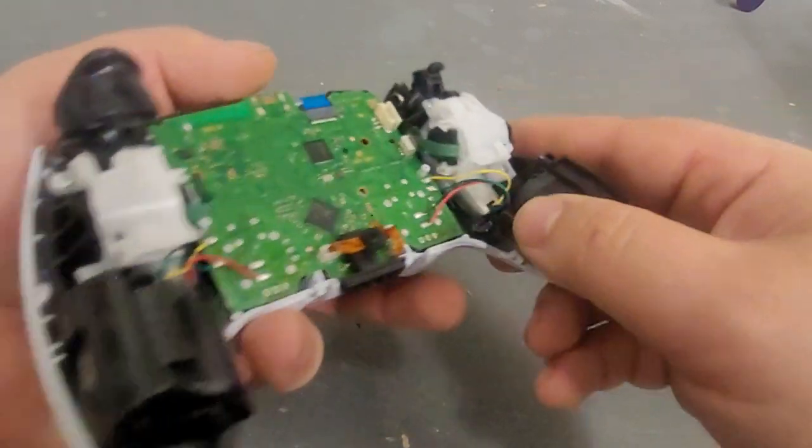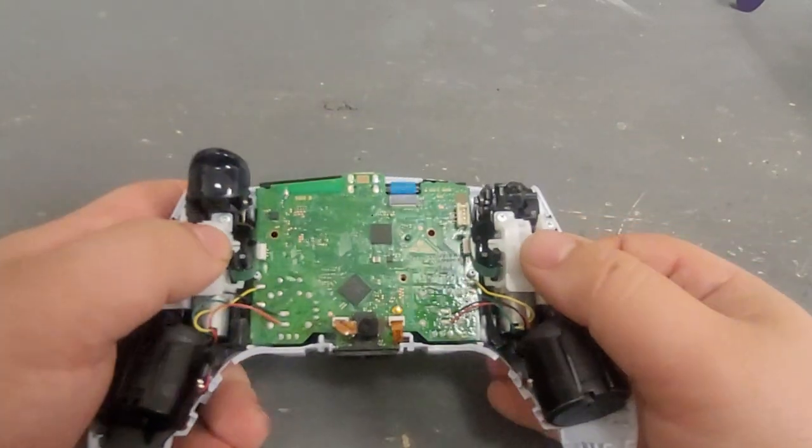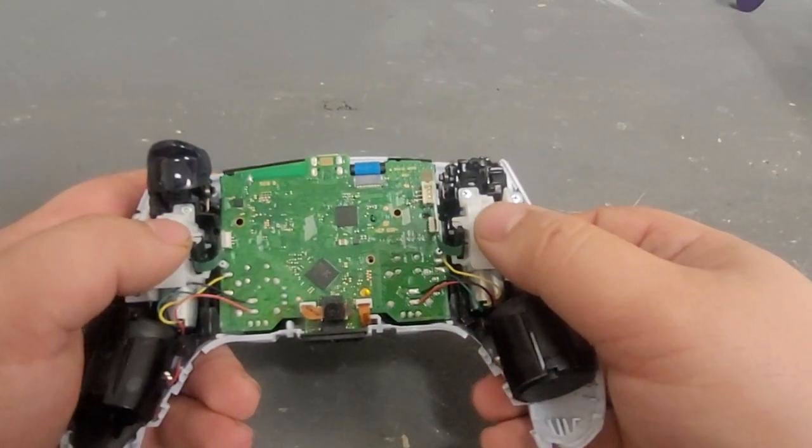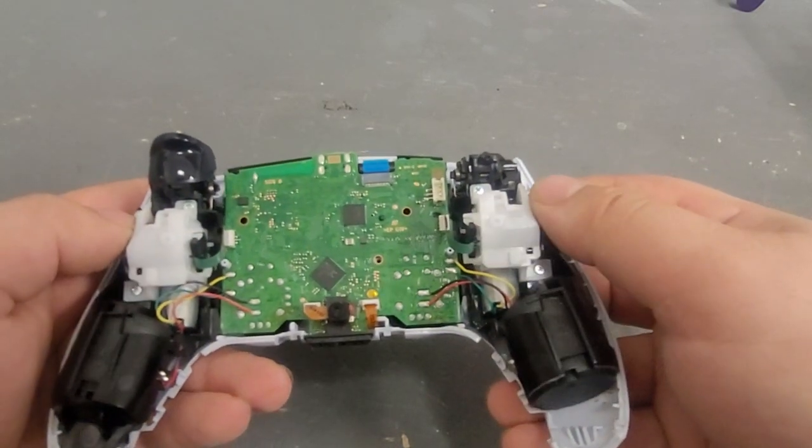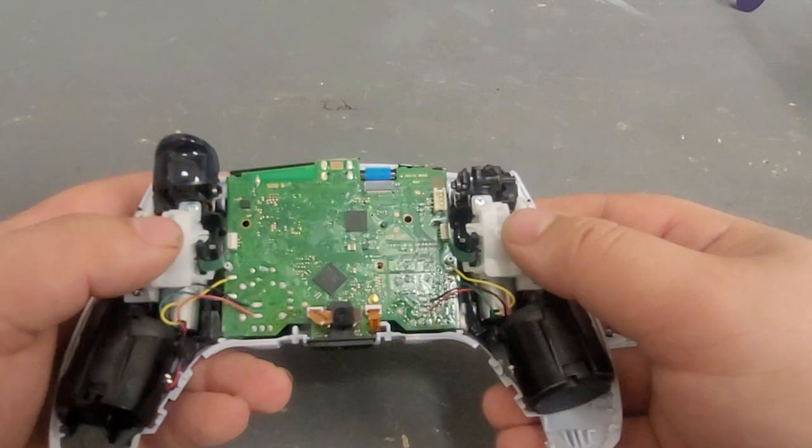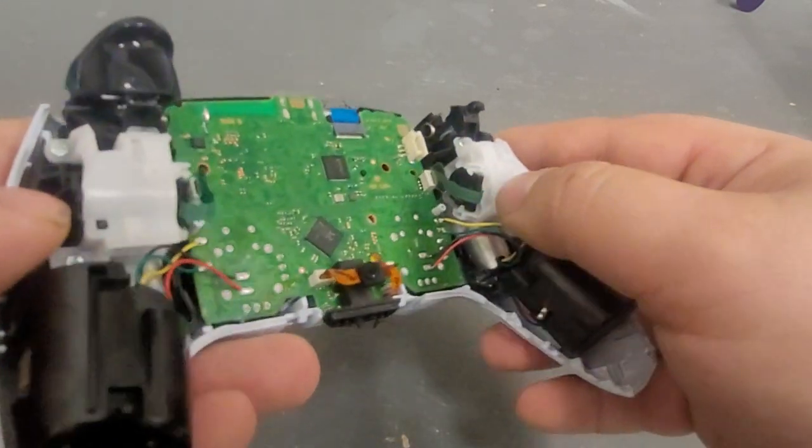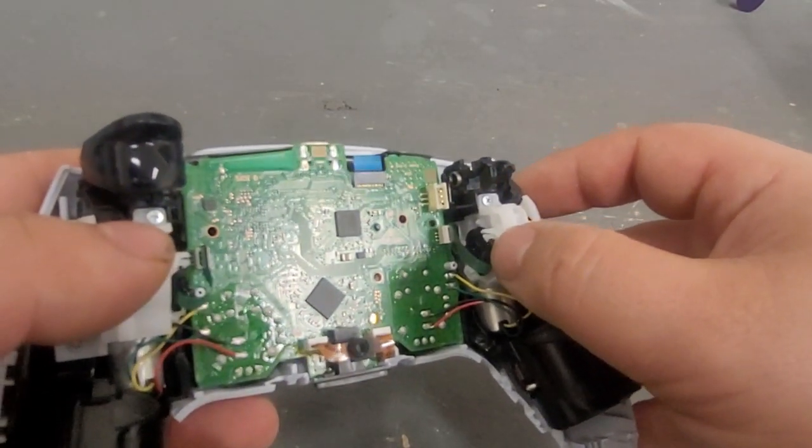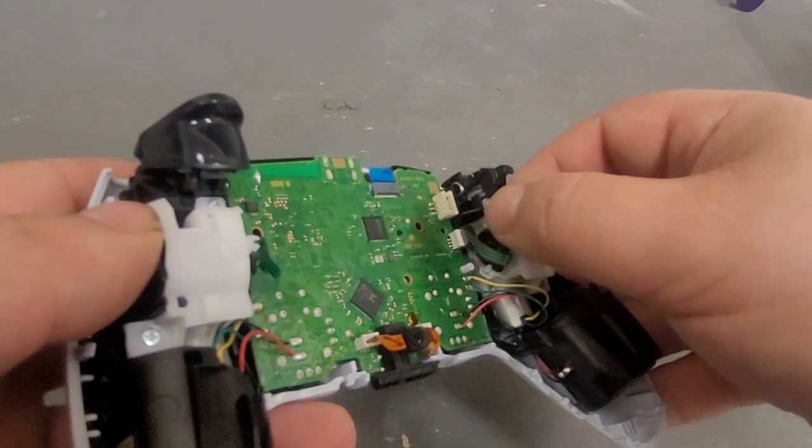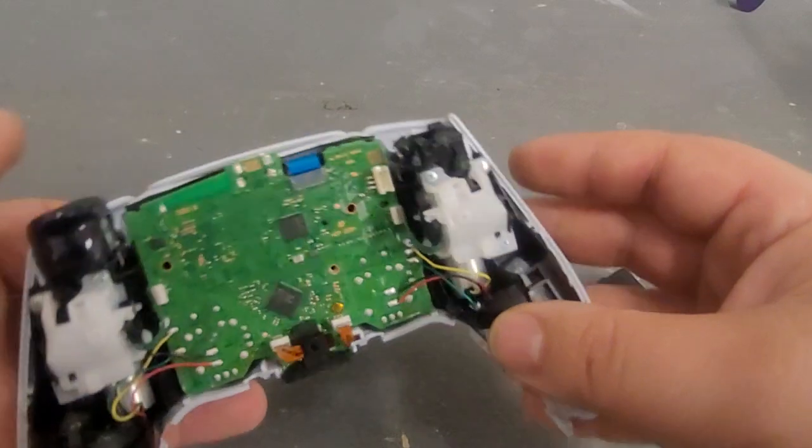So there are a couple different models of the BDM50. There's really only two differences and the haptics come apart the same way on both of them. They're either going to be like this where you're going to see a green ribbon that's integrated into the potentiometer here, or you'll see one where it's got a little circuit board here with a ribbon that plugs into it.